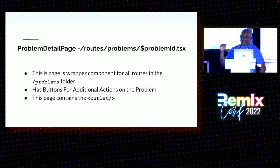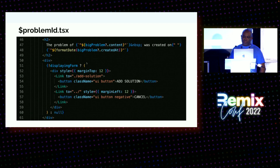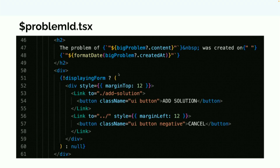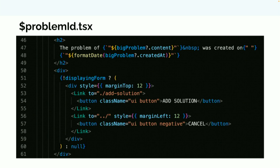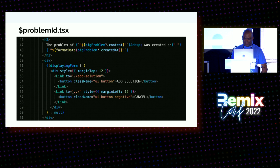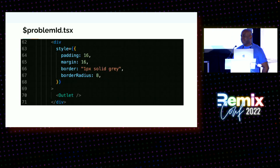This page is the top-level wrapper component for all the other routes that exist in the problems folder. In my wrapper component I have some action buttons at the top, but the important thing is the outlet — that's where all the child routes get rendered. In the source code from my problemid.tsx file, you can see it's a wrapper that takes the problem content and renders some information about it. I use the location to determine whether to display the action buttons. The one we're mostly concerned with is 'Add Solution.' I found it pretty cool that I can use relative routes — I don't have to write the full path slash problem slash problemid slash add-solution. And I can also go back using a relative route, going up two directory levels. The outlet is at the bottom of the page.